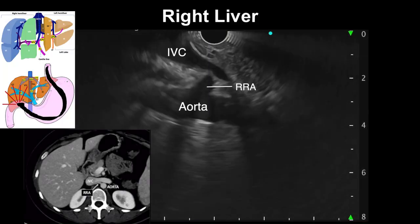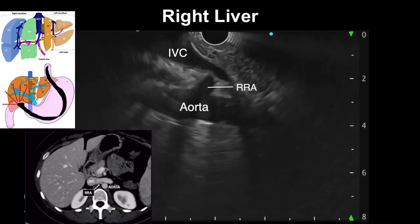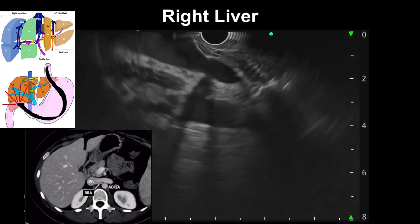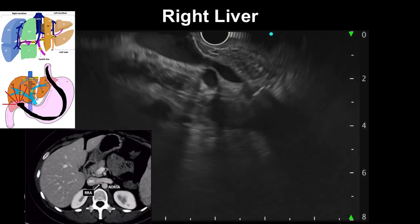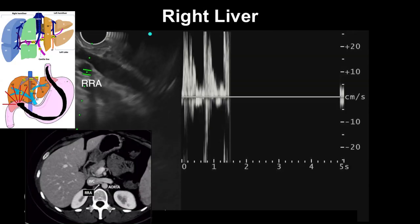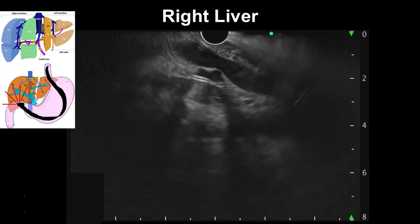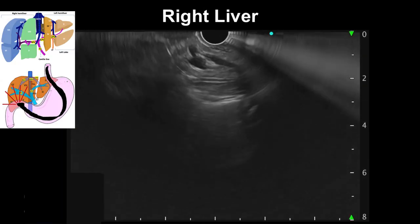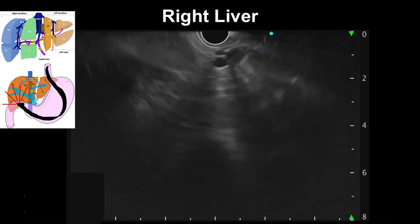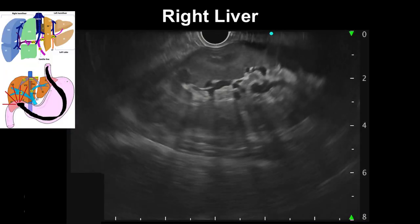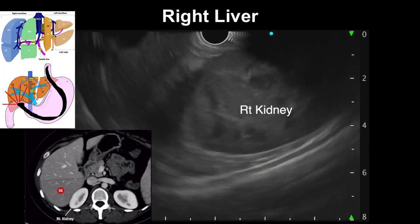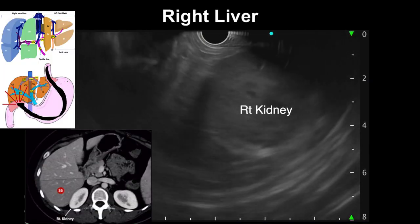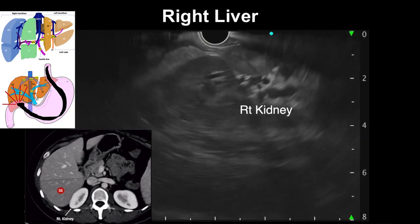With counterclockwise rotation, the transducer is facing posteriorly and the IVC can be imaged with the right renal artery below, branching from the aorta as confirmed by Doppler flow. The right renal artery can be followed to the right kidney — our landmark to image segment 6 — which can be seen above it on the upper left part of the screen.